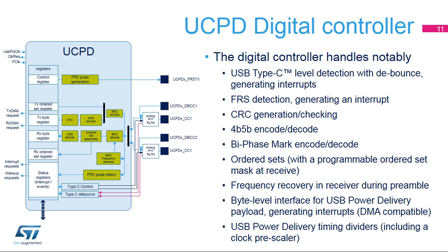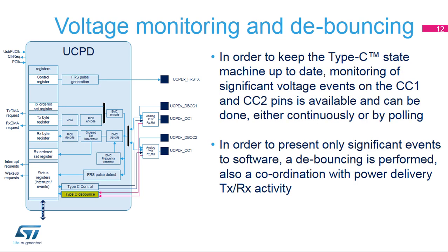Due to the bi-phased mark coding, two transitions may occur per transmitted bit, so the actual maximum clock frequency is 600 kHz. The PHY monitors the state of CC1 and CC2 — either continuously or by polling — to detect and signal events to software by setting flags in the UCPD_SR register. To optimize power consumption, polling is recommended because Type-C detectors are off between polls, rather than wake-up from stop which requires detectors permanently on. The static level on CC pins is determined via threshold detectors in the PHY, giving a voltage range value in registers and facilitating Type-C state machine implementation in software. The Type-C debounce subunit filters events reported to software and coordinates event signaling with power delivery TX and RX activity.